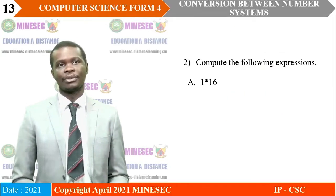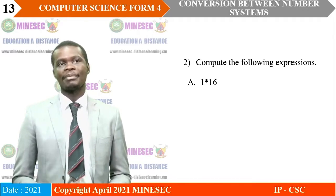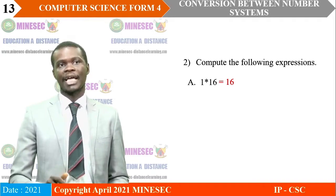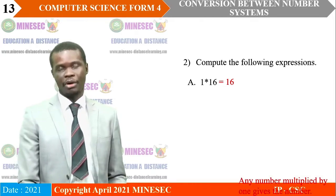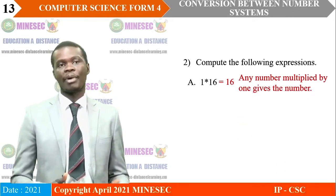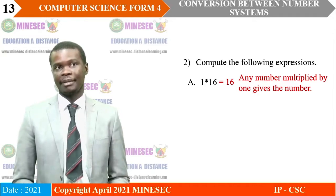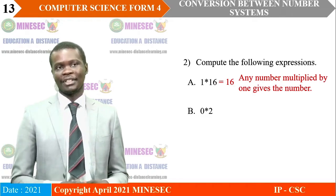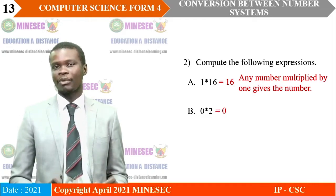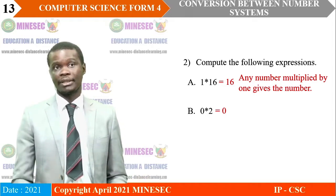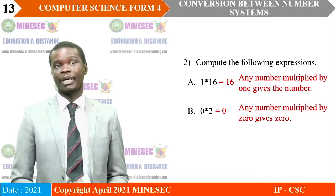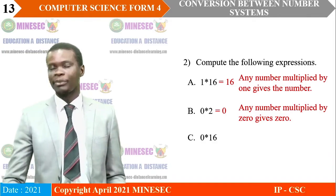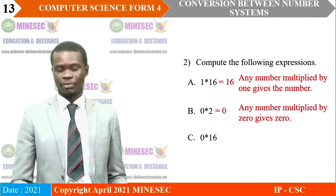For the second exercise: 1 times 16 gives us 16 — any number multiplied by 1 gives the same number. 0 times 2 gives us 0 — any number multiplied by 0 gives 0. Applying the same principle, 0 times 16 gives 0.